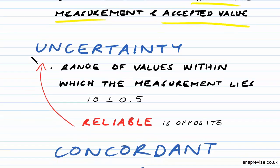The third key term is uncertainty, and uncertainty plays a major role in error as well. The uncertainty is the range of values within which our measurement lies. So if we're given a value of 10 to an uncertainty of 0.5, that's plus or minus 0.5, that means our value could be between 10.5 and 9.5.